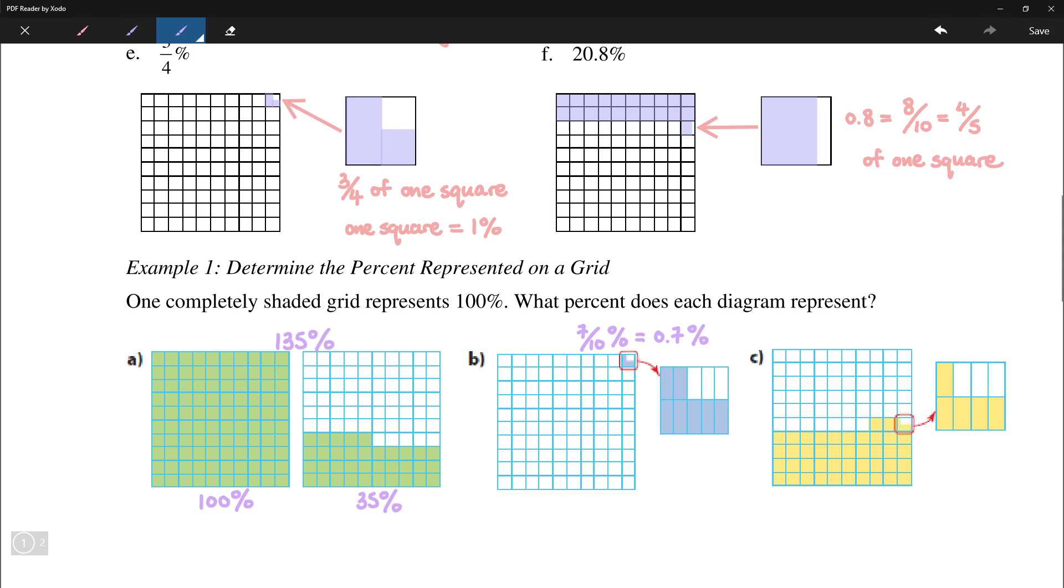And last one, notice in this case, 4 rows of 10 are filled in and 2 more squares. So that's 42%. And then the final square, 5 out of 8 parts is filled in there. So this is 5 eighths percent. So that's how we can interpret those diagrams there.